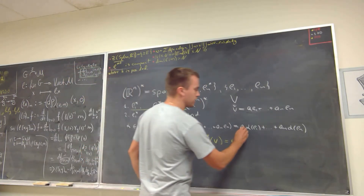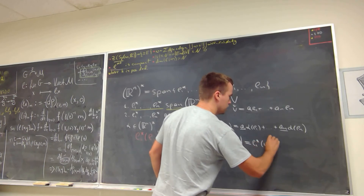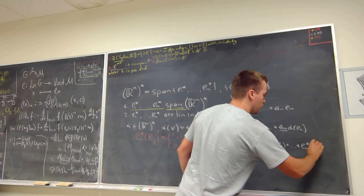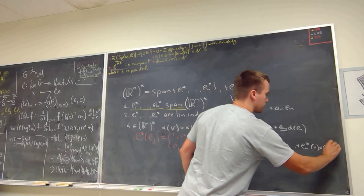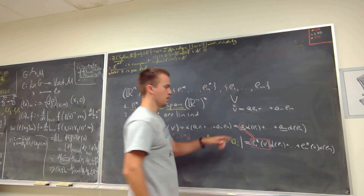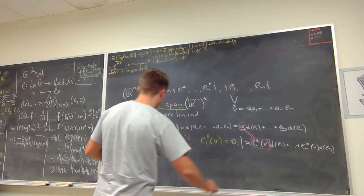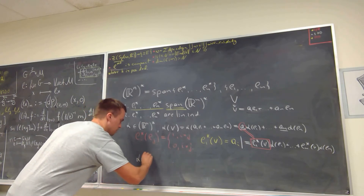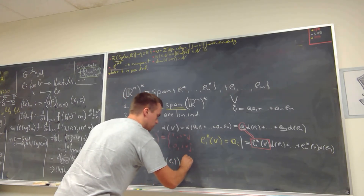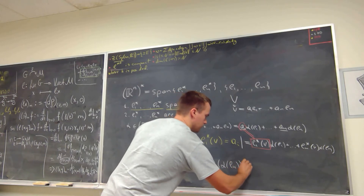Every coefficient can then be rewritten using the dual vectors: we get e1 dual evaluated at v times α(e1), plus en dual evaluated at v times α(en). Rearranging, α(v) equals α(e1)·e1*(v) plus ... plus α(en)·en*(v), where each α(ei) is a constant.